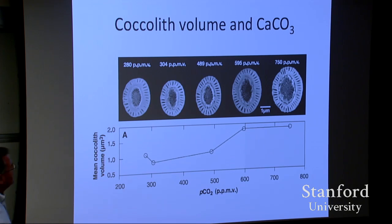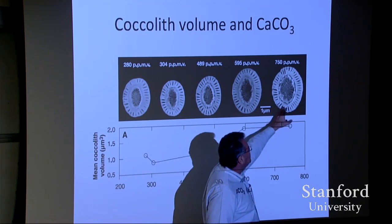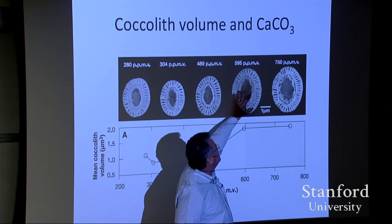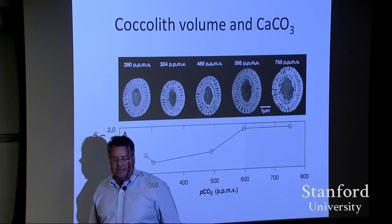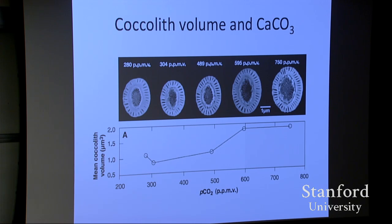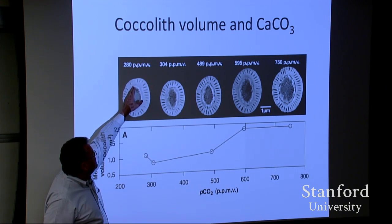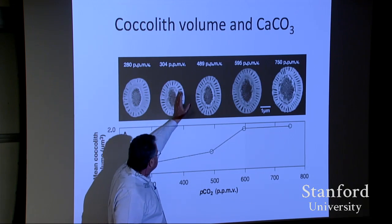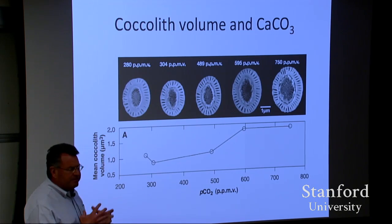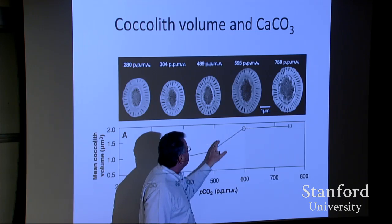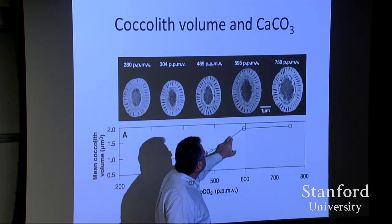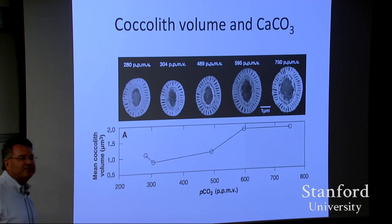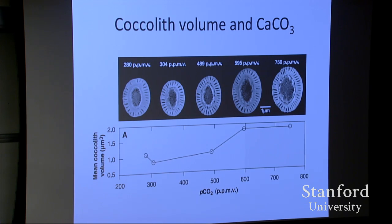They asked how that affected the calcification of individual coccoliths, which make up the White Cliffs of Dover. What they found is if you go to modern CO2 levels and look at actual volume and mass, then change it to where we think Earth's going, they actually calcify more. We're seeing this in a variety of groups that were extant, that have the genetic heritage to have lived through the Eocene Thermal Maximum.